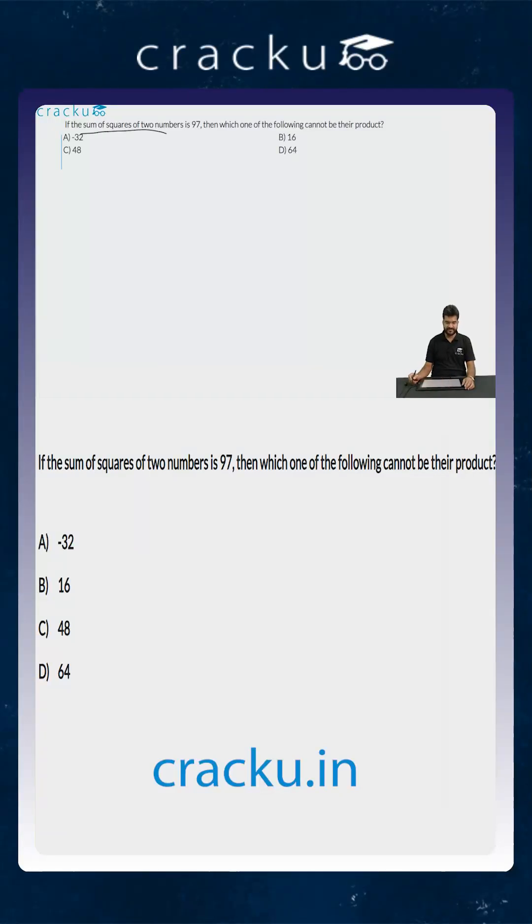In this question it is given that the sum of the squares of two numbers is 97. So let the numbers be a and b. So a² + b² is given as 97.